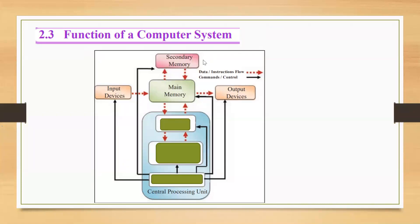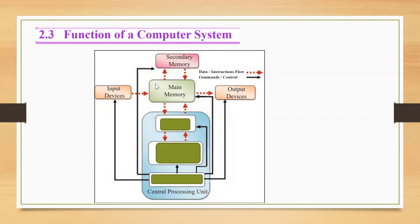That is secondary storage devices. You know this is the main memory — another name for the main memory, we can say it is Random Access Memory, RAM. Normally we input some data, it goes to the main memory, then after processing it goes to the output devices. This is the temporary memory space that we call Random Access Memory — that is volatile memory.